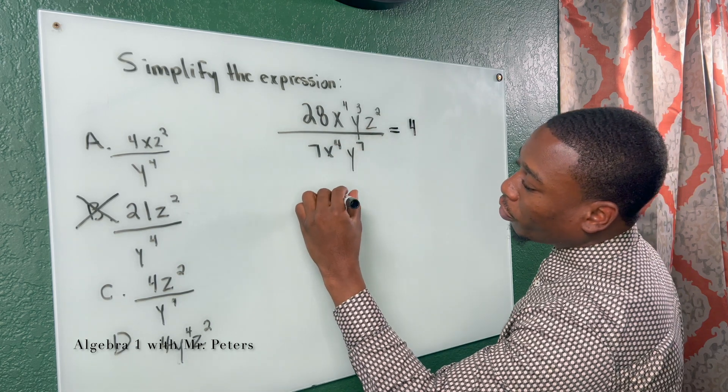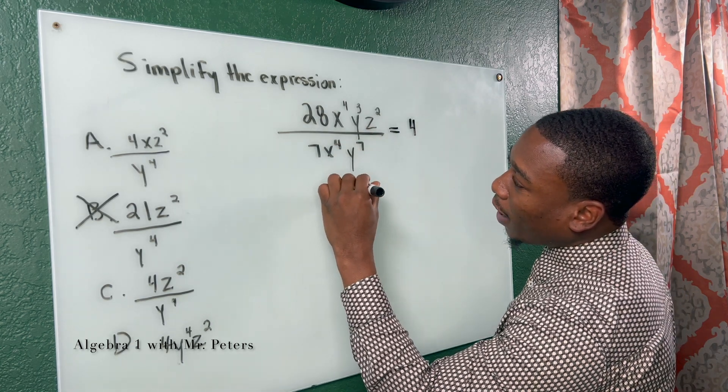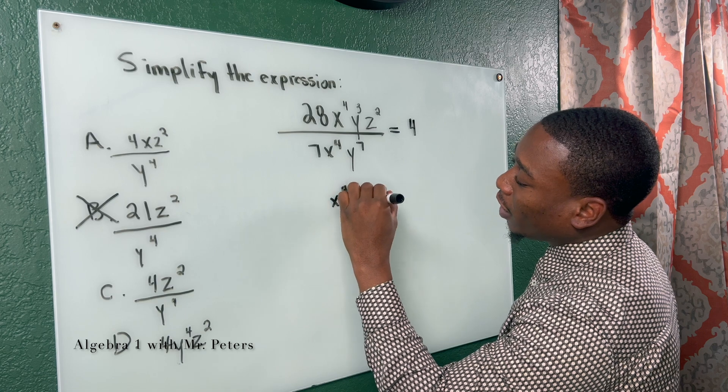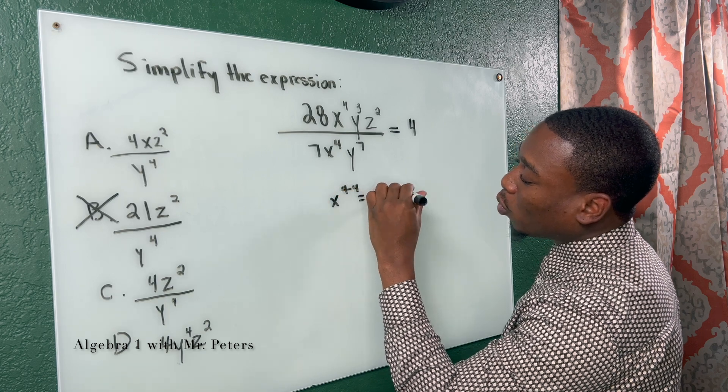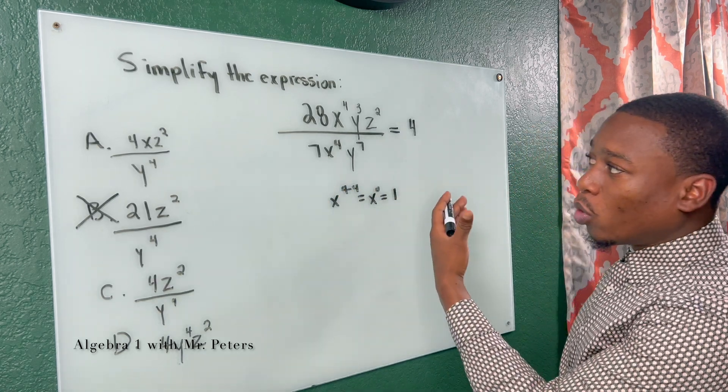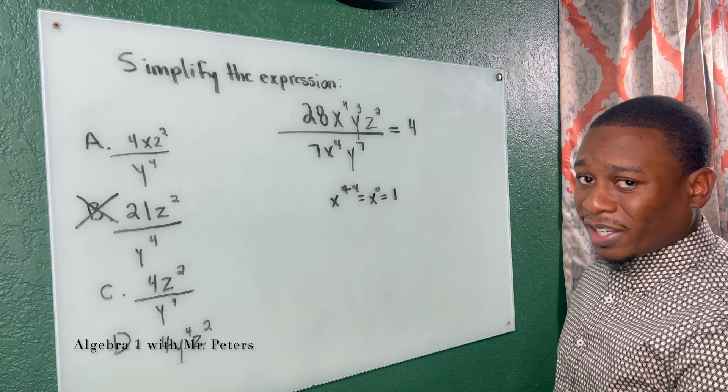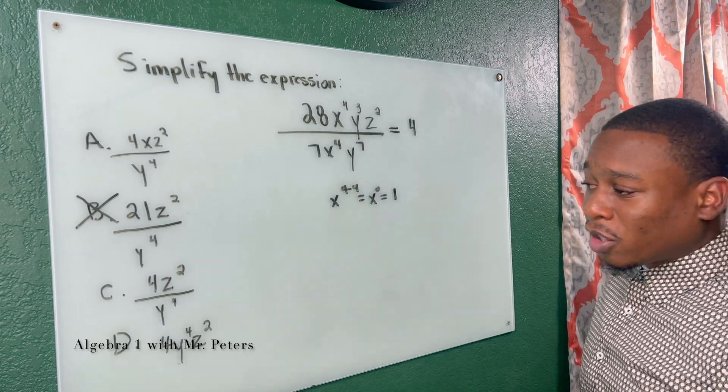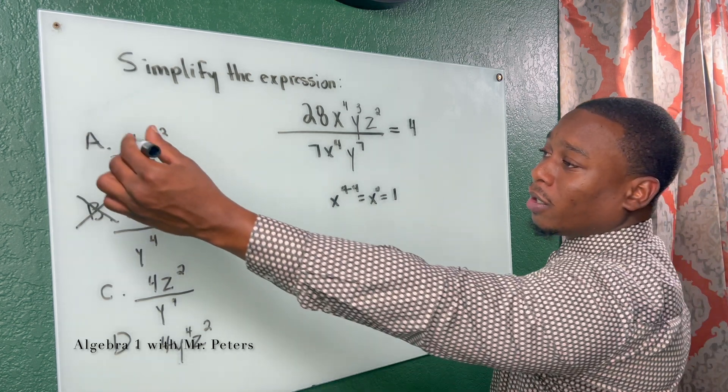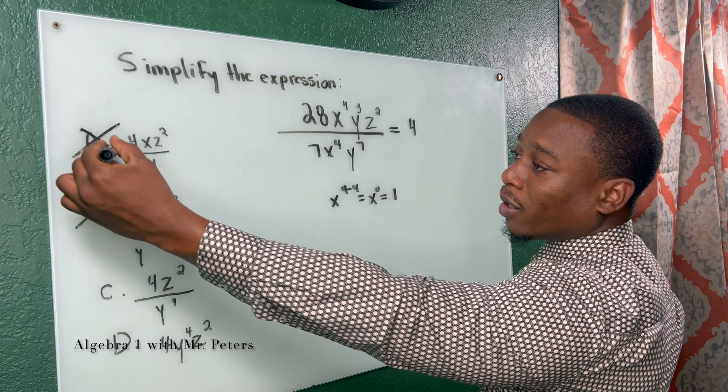I know 28 divided by 7 gives me 4. Now, x⁴, once we subtract 4 from 4, that gives me x⁰, which is equal to 1. I don't need to write 1 next to 4, but once we multiply it, it's the same exact thing. So with that being said, I could eliminate this because x is not going to be in our answer. So now I'm down to two answer choices.